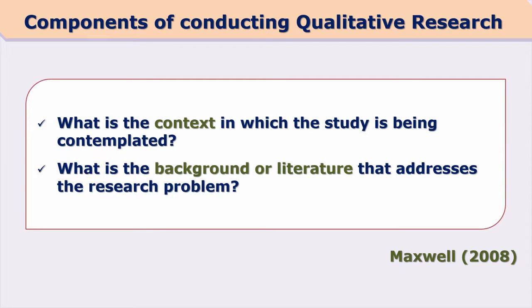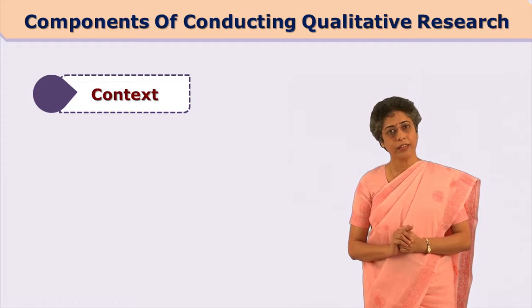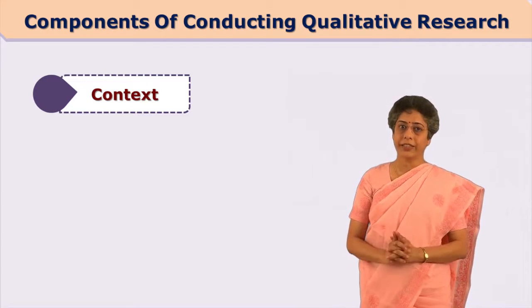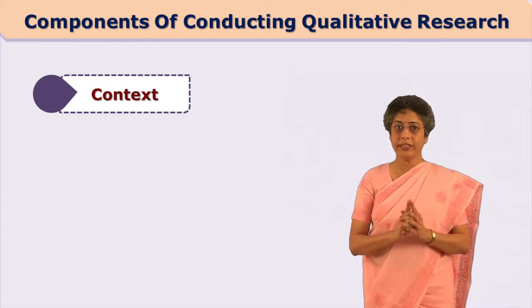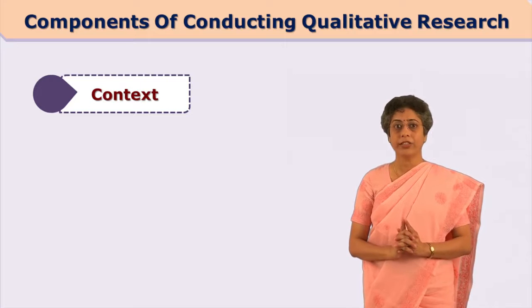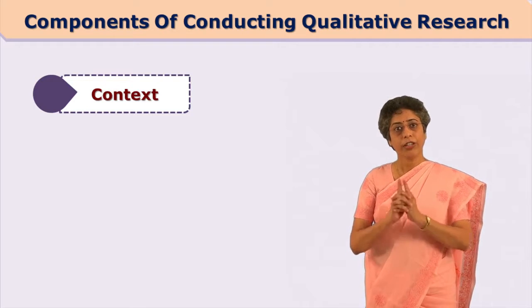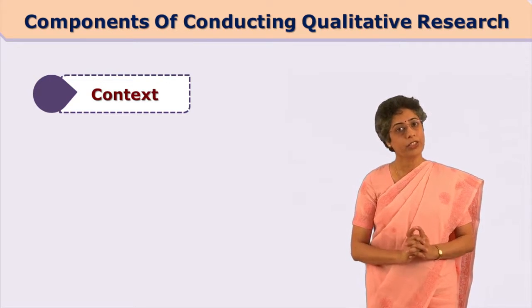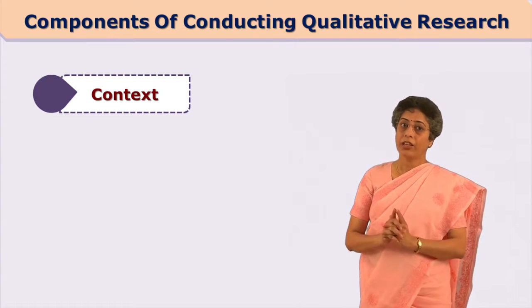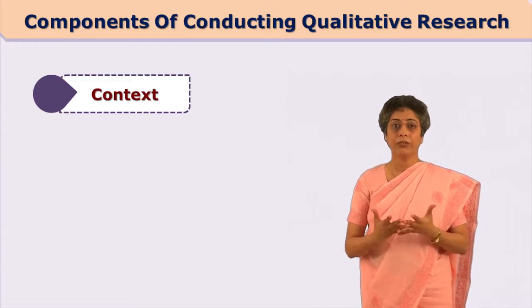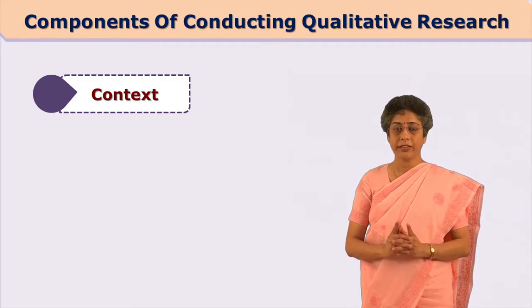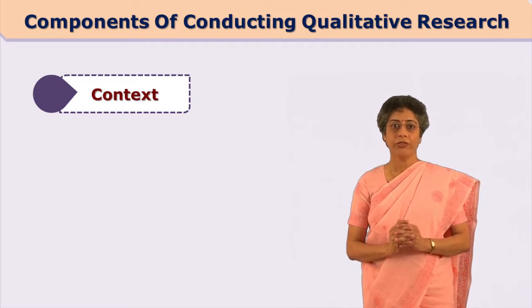The second component is the context of the study — what is the context in which the study is being contemplated, and what is the background or literature that addresses the research problem. In this component we try to find out the context of the entire research. Considering the example of the tribal area and doctor's intervention, context is very important in qualitative research: which culture are we going to study, which phenomena are we going to analyze, and in which context?